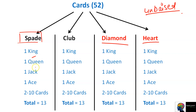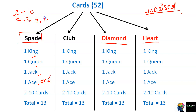In each suit, the cards are: King, Queen, Jack, and Ace — you can call Ace as number one. Then the rest of the cards are numbered 2, 3, 4, 5, 6, going up to 10. Spade and Club are black color; Diamond and Heart are red color.